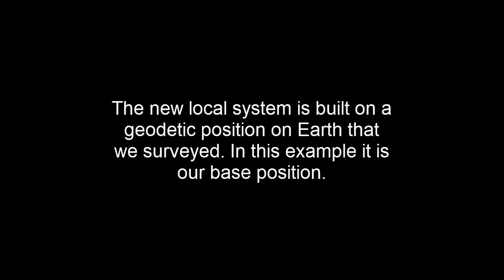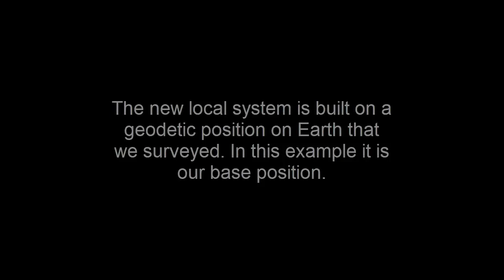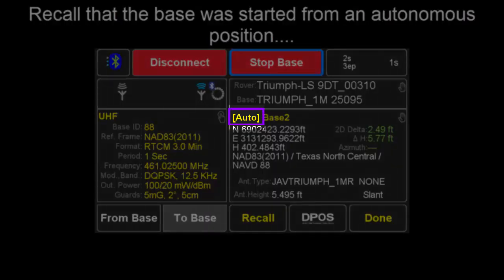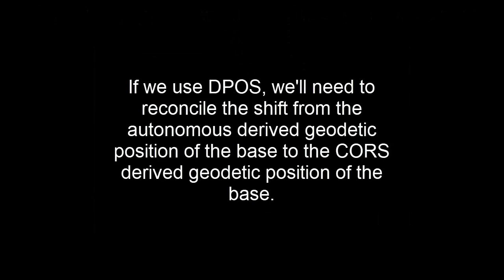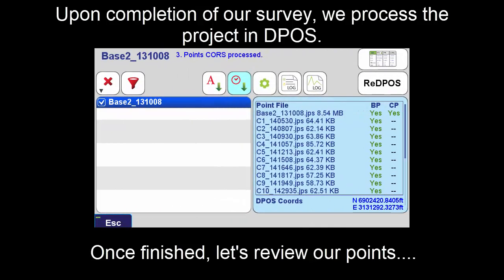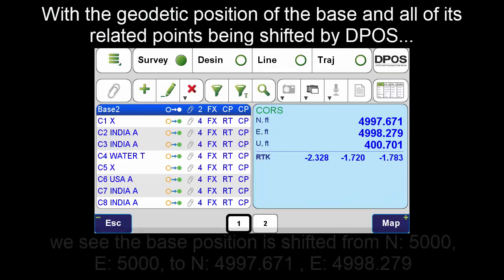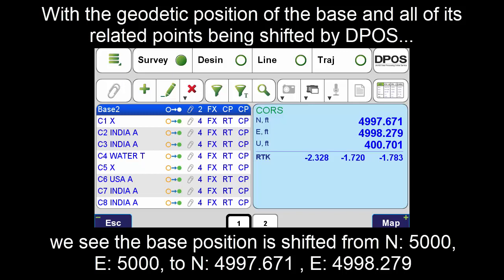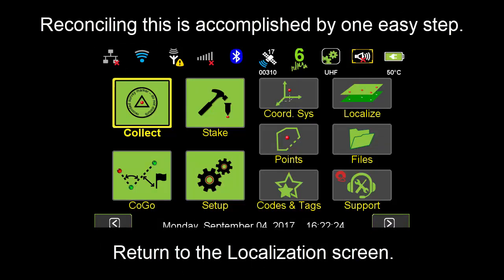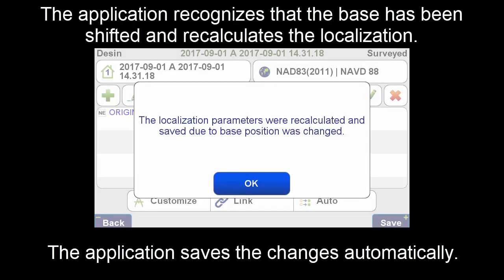The new local system is built on a geodetic position on the earth that we surveyed — in this example, our base position — which was started from an autonomous position. If we now use DPOS, we'll need to reconcile the shift from the autonomous-derived geodetic position of the base to the CORS-derived geodetic position of the base. Upon completion of our survey, we process the project in DPOS. With the geodetic position of the base and all of its related points being shifted by DPOS, we see the base position is shifted from 5000-5000 to 4997.671 and 4998.279. Reconciling this is accomplished by one easy step: return to the localization screen. The application recognizes that the base has been shifted and recalculates the localization, saving the changes automatically. Returning to the points screen, we see that the coordinates for Base 2 are again correctly displayed.